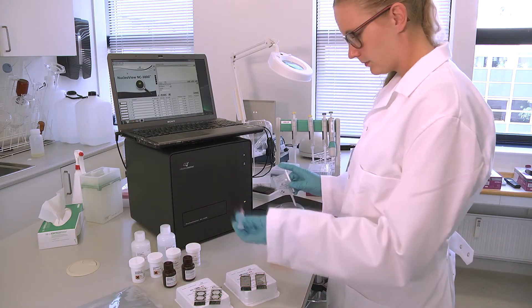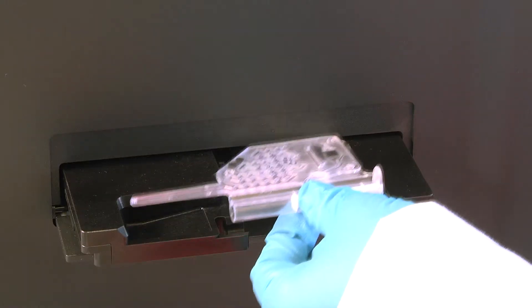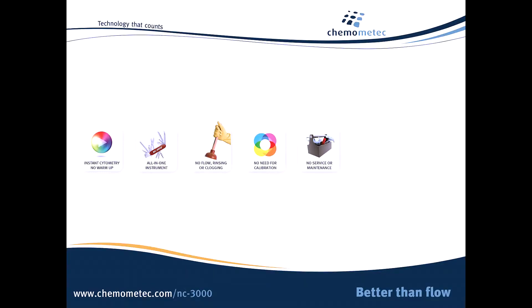For high-speed cell counting, the VIA1 cassette provides a one-step cell count without pre-treatment, while the slides give you the flexibility to perform up to 8 cell counts in less than 3 minutes.